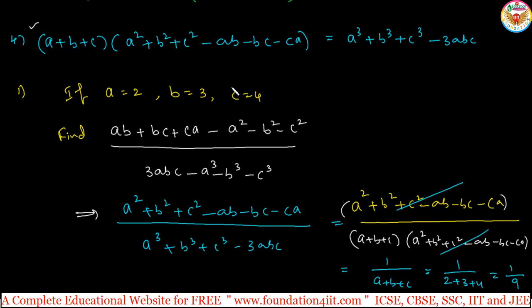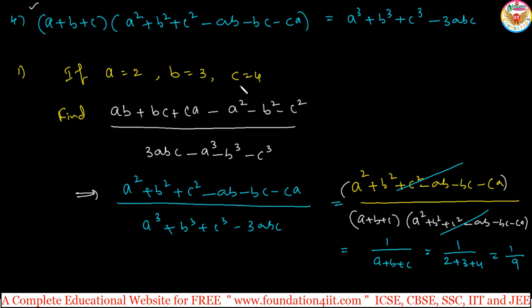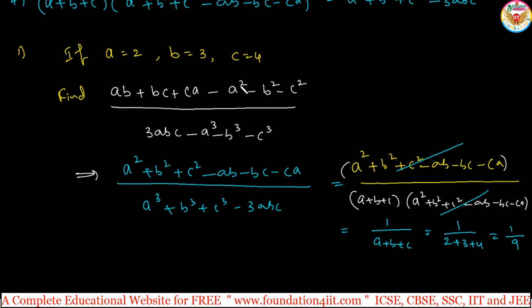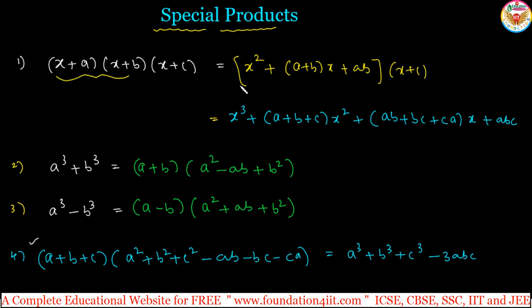Suitable identities were mentioned in the question, so we applied them. Remember these four special product formulas. Whenever a question asks to use a suitable identity, apply that identity directly — do not expand everything manually. You can subscribe to our channel and share with your friends. Go through the chapters in order and you can understand the concepts easily, one by one.